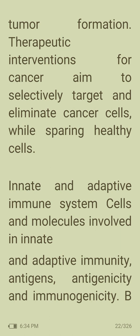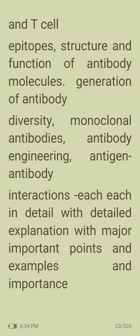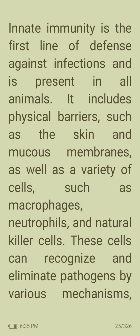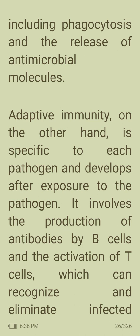The immune system is an intricate network of cells, tissues, and organs that defends the body against pathogens such as bacteria, viruses, and fungi, as well as abnormal cells such as cancer cells. It is broadly divided into innate immunity and adaptive immunity. Innate immunity is the first line of defense against infections and includes physical barriers such as the skin and mucous membranes, as well as cells such as macrophages, neutrophils, and natural killer cells.